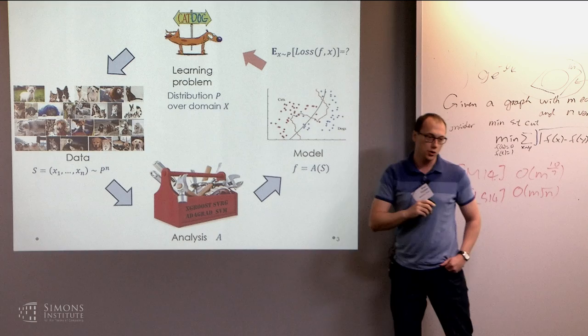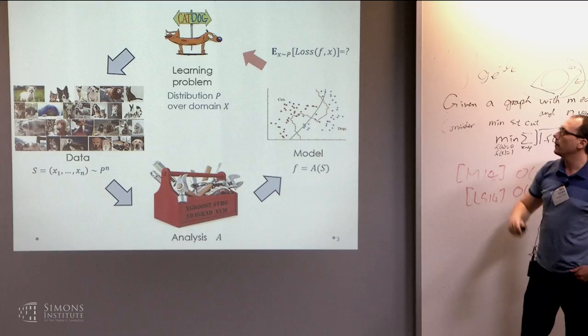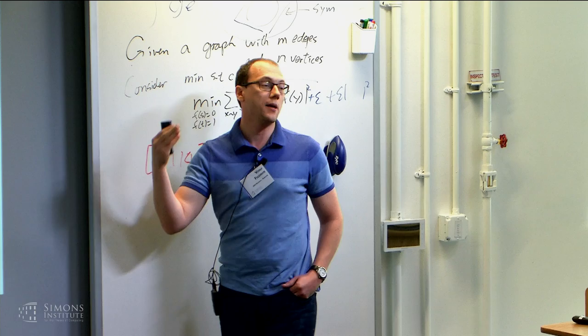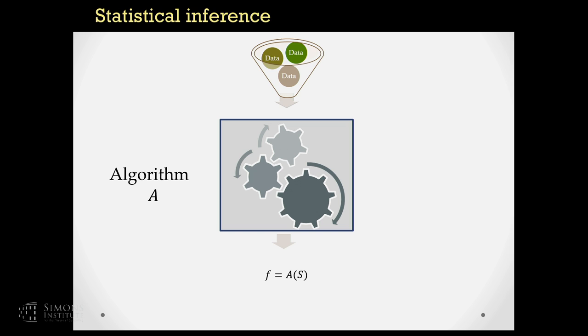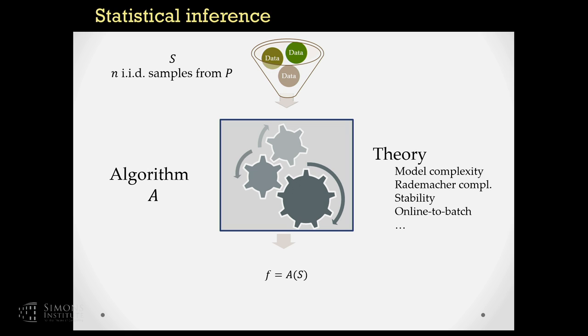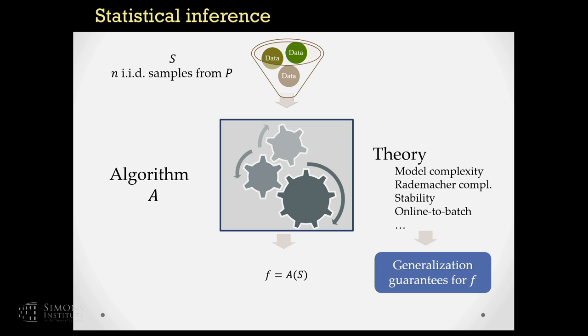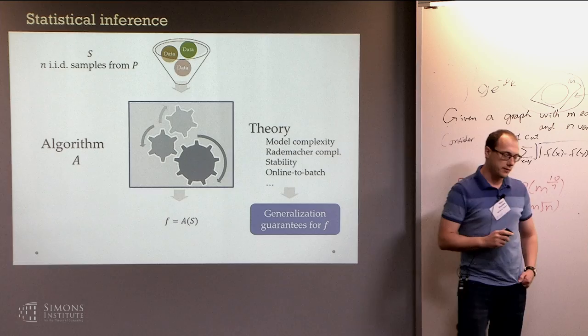The question is how well does this model work for this learning problem, usually formulated as the question about the expected loss of the model on a point drawn randomly from the unknown distribution P. We don't know this distribution, so we cannot measure this loss directly — we need to use statistical inference. Usually in machine learning theory, we assume the algorithm is run on IID samples and use tools such as notions of model complexity or stability to obtain generalization guarantees.